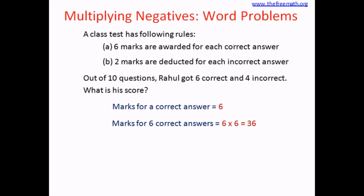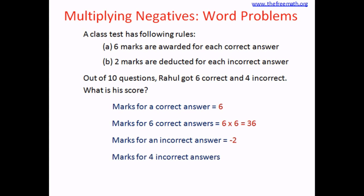The second rule says that 2 marks are deducted for each incorrect answer — deducted means taken away. So marks for an incorrect answer equals negative 2. When you get something it is positive; when you lose something it is negative. So you are going to get negative 2 marks. Rahul got 4 incorrect answers, so marks for the 4 incorrect answers are 4 multiplied by negative 2. Since we have one positive and one negative number, the product is negative 8.